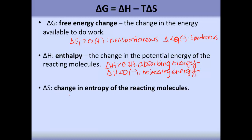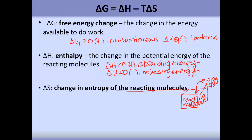The next term is delta S, or the change in entropy of the reacting molecules. You can think of the reacting molecules for delta H and delta S as a box. If I'm putting energy into that box, delta H is going to be positive. Same thing for entropy — if I'm increasing the entropy of the reacting molecules, it's going to be positive. On the other hand, if I'm losing energy or entropy, then delta H or delta S are going to be negative.